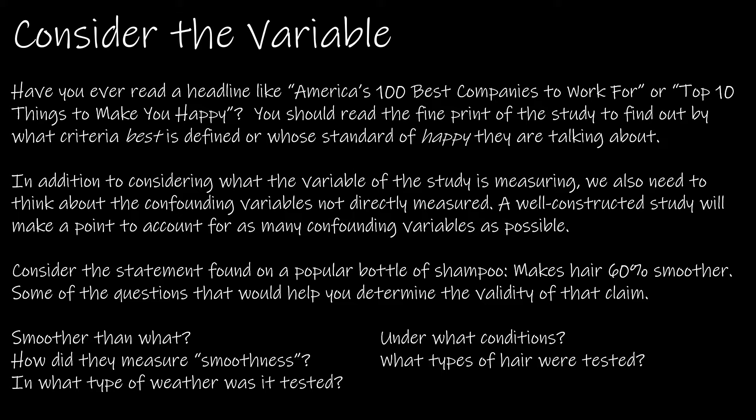Consider, for instance, a bottle of shampoo that says it makes hair 60% smoother. How do we know what that means? Smoother than what? Smoother than it was before? How do they measure smoothness? What type of weather? I have naturally curly hair, so smooth for me is different than smooth for somebody else.